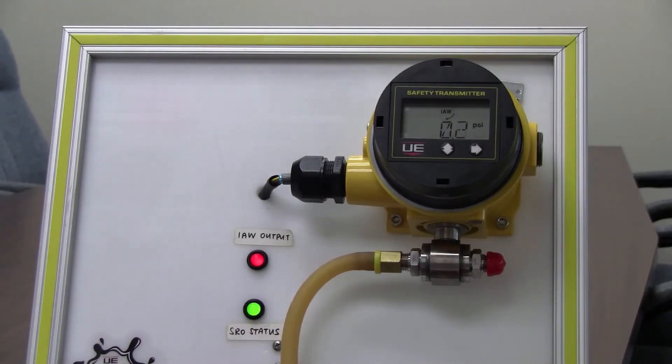If I release the pressure, that green status light comes back on. So the safety relay output was open for a short time there and then closed again.